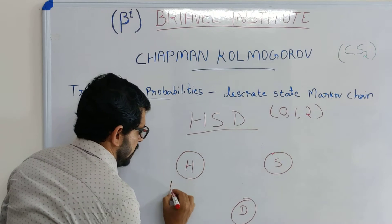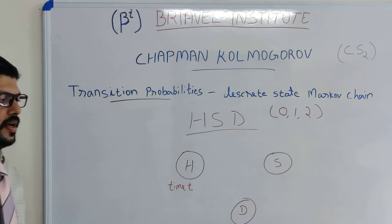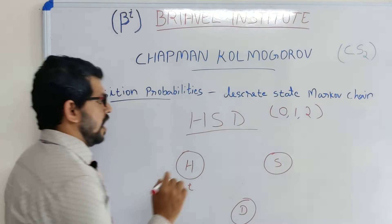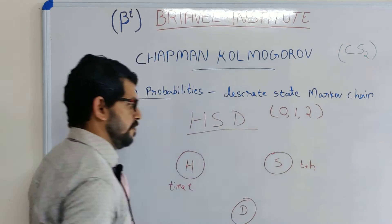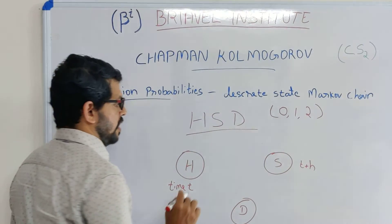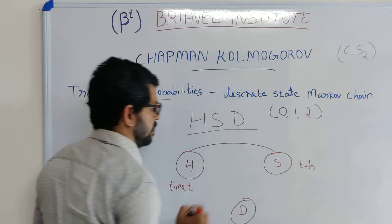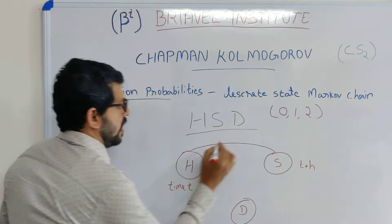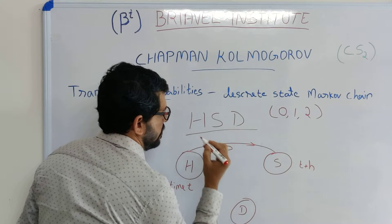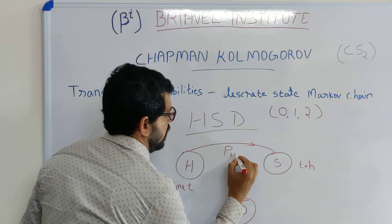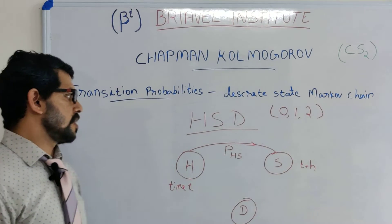At time t we are in the healthy state. At time t plus h — a small interval of time — there is a chance of jumping from healthy to sick. This transition probability is represented as p of HS, meaning health to sick.